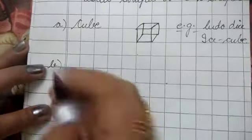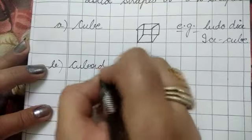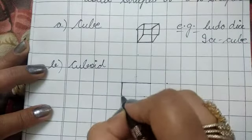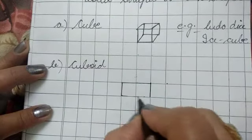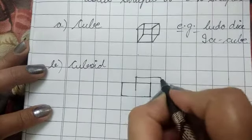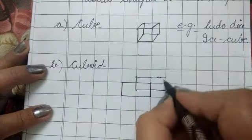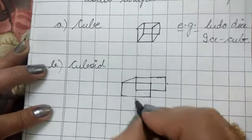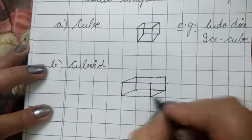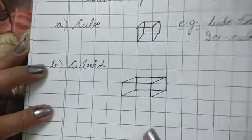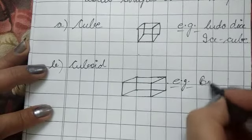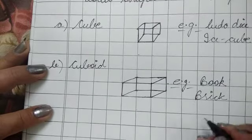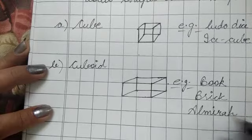Second one is cuboid. For this, firstly make a rectangle, then join it. For example, our book, brick, or we can say almirah also.